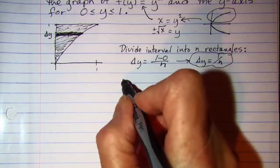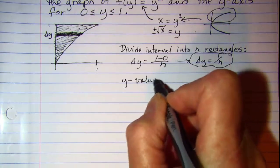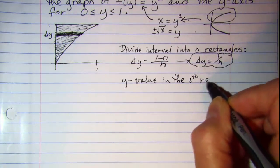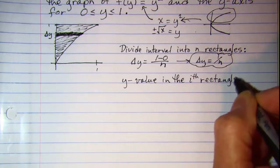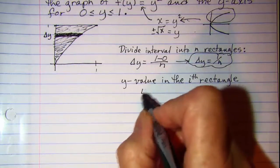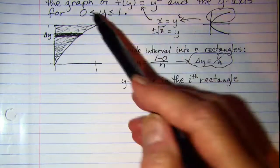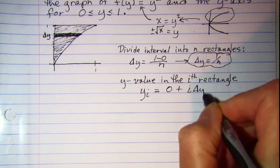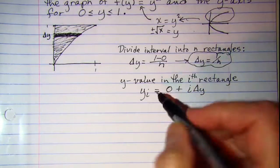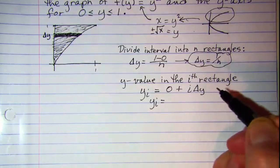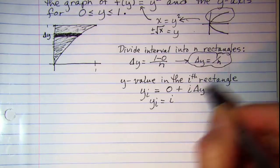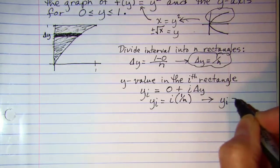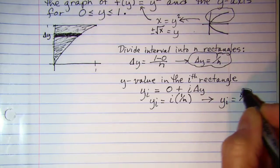Then our next step is to find the value in the ith rectangle. So that would be y sub i equals the lower boundary which is 0 plus i delta y. And so the expression that we'll save for use in our problem is i and then in place of delta y we have 1 over n, or y sub i equals i over n.